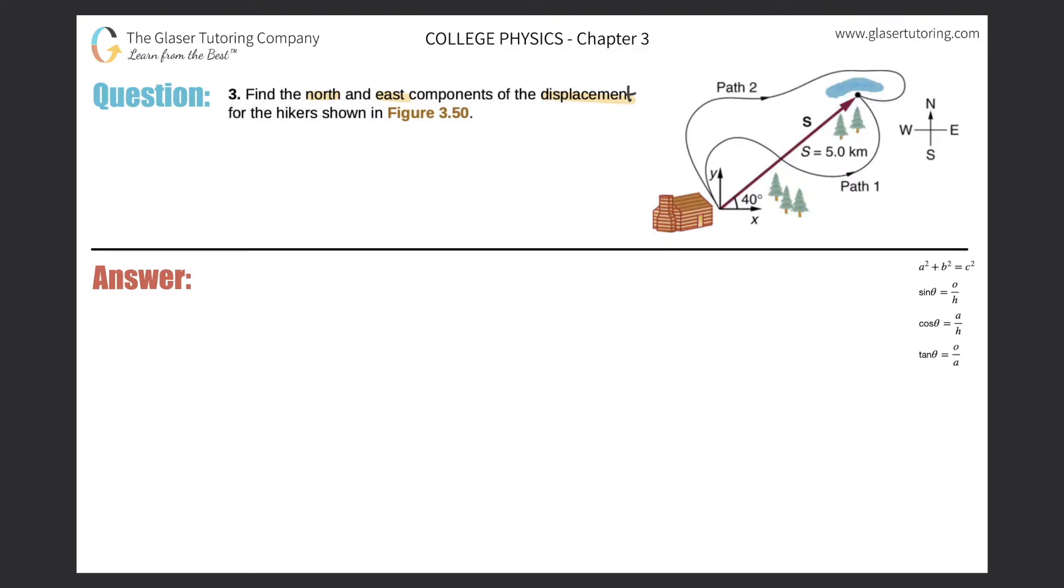Where's the displacement in the picture? The displacement is the straight line distance between the start point and the end point. So the starting point is here, the ending point is here, and that's the straight line distance. Therefore, it is the displacement.